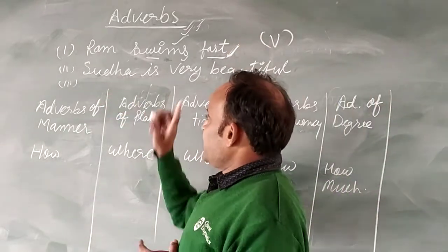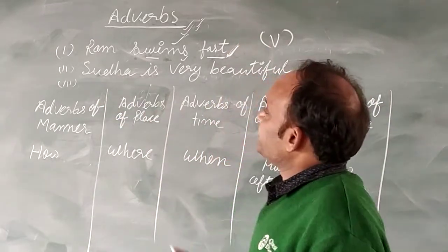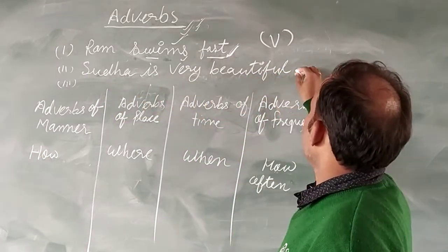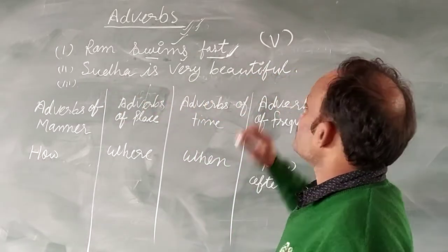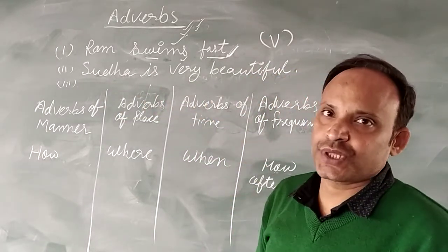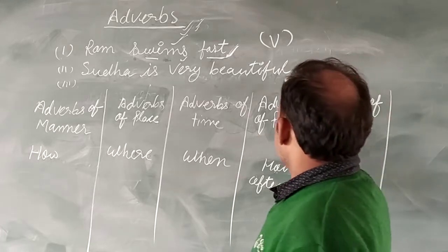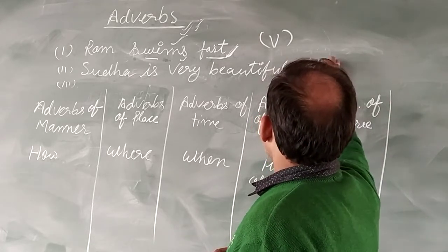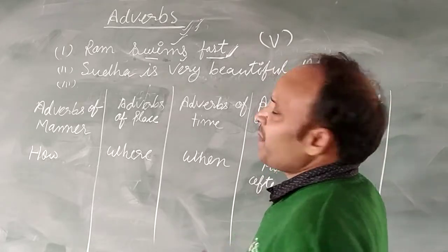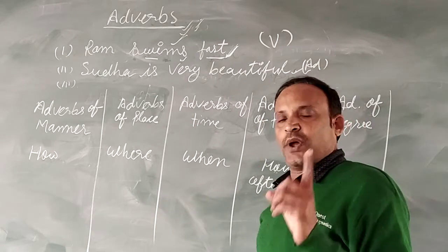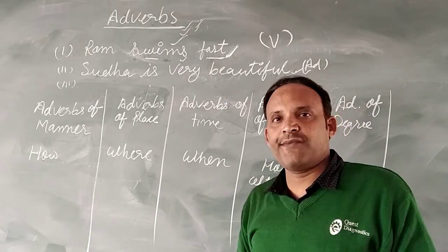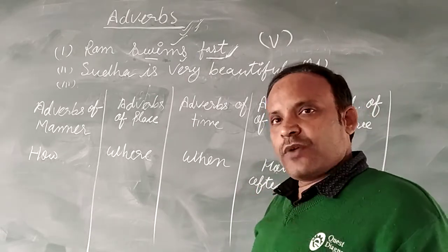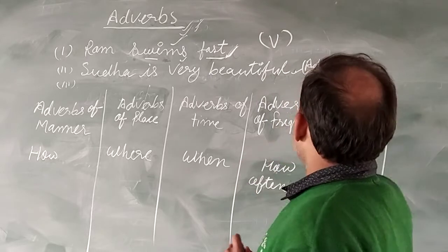In this sentence, the sky is very beautiful. 'Beautiful' is an adjective. Now I have told you that adverb also describes the adjective.